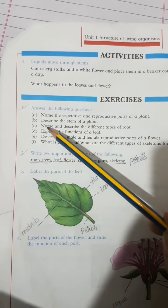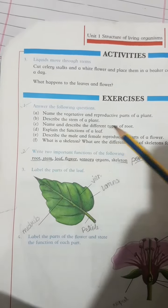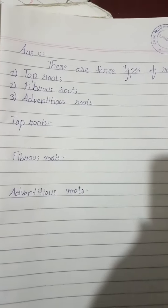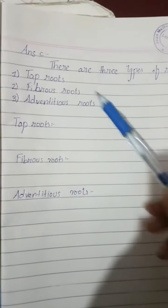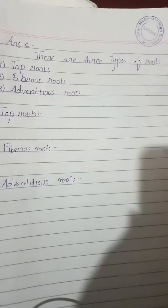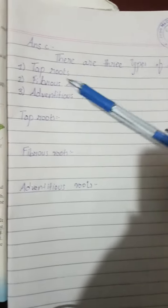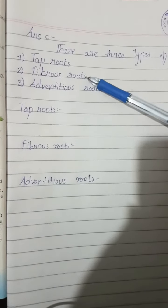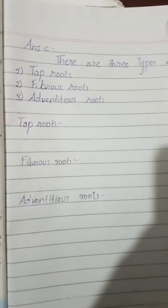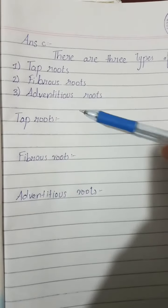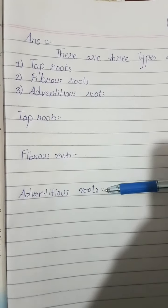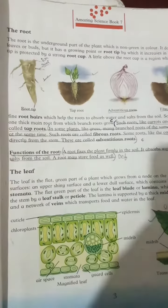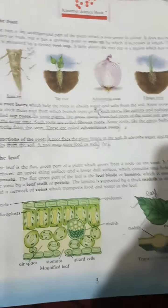Coming towards the third question: name and describe the different types of root. There are three types of roots. We will make three columns: tap roots, fibrous roots, and adventitious roots. The full explanation is from the book, page number 3.